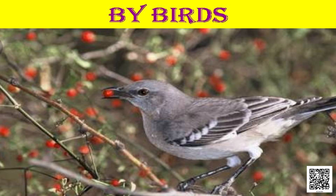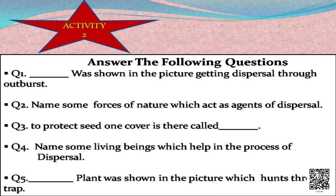Now there is an interesting activity for you. There are some questions set according to the chapter we have already read. Let me see how much you remember and what you have understood. First: what was shown in the picture getting dispersal through outburst? Next: name some forces of nature which act as agents of dispersal. It was very simple and easy, isn't it?